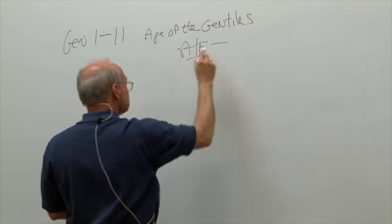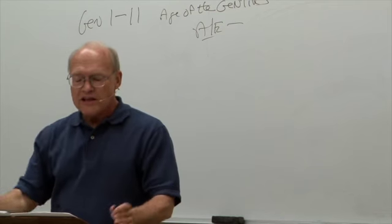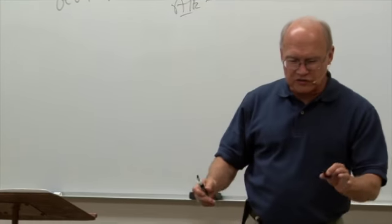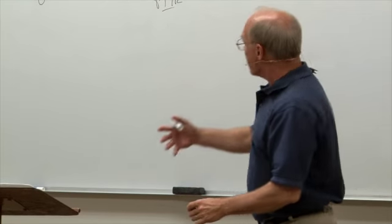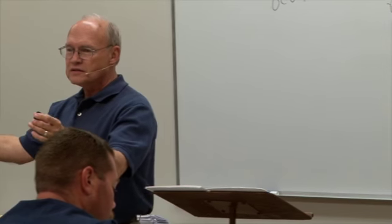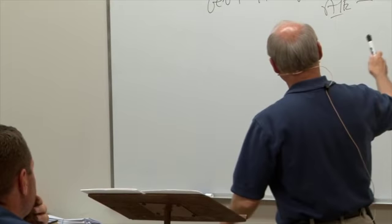Genesis 1 through 11 is called the age of the Gentiles because on the face of the earth, the word Gentiles comes from the Greek ethnos, meaning nation. There was Adam and Eve, then Cain, Abel, Seth, and others, then Noah. You see all these people, the flood, people dividing — all in Genesis 1 through 11. That's the first section of the Bible.